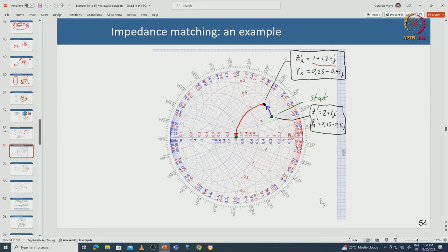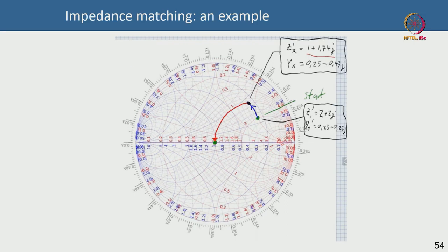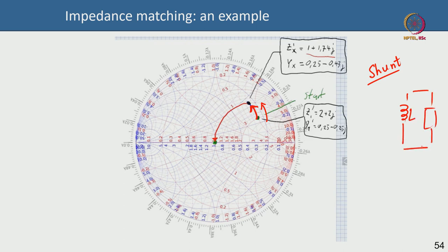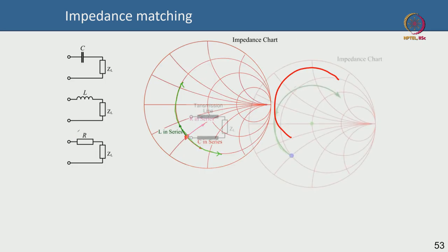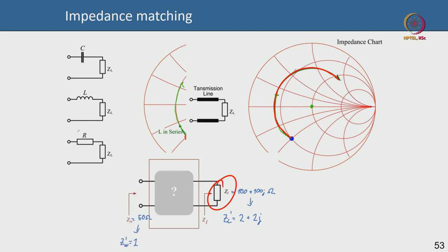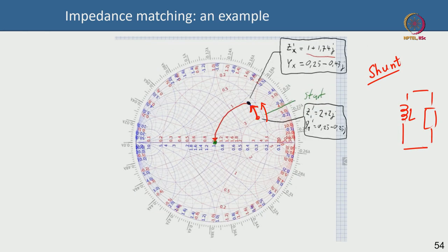Now, the things to note: because I am moving on the admittance circle, everything is parallel or shunt. So I am going to have something in shunt or parallel. Moving this way on the admittance circle corresponds to an inductor. So I am going to have an inductor in shunt with the load — the load being 100 + 100j or 2 + 2j — and then I will move along the next circle.